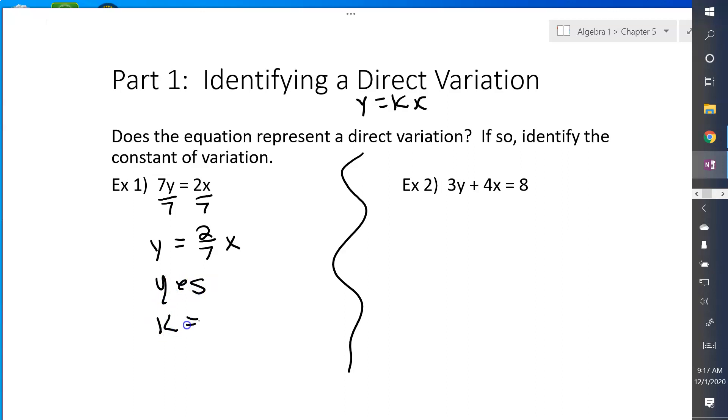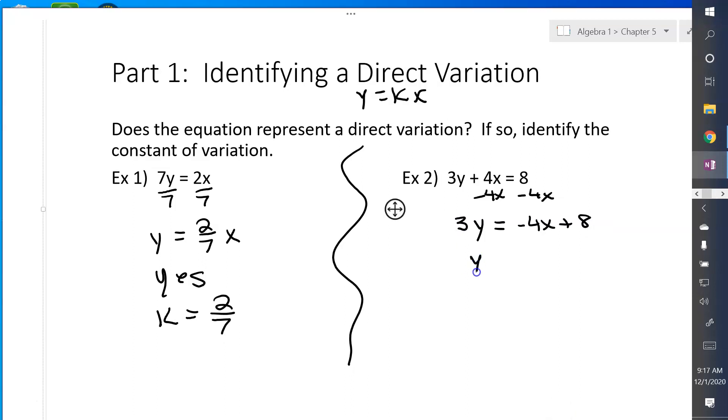And my constant of variation is the fraction 2 over 7. Now let's look at example 2. I need to solve for y. So I'm going to subtract 4x from both sides, and so I get 3y equals negative 4x plus 8. Then I need to divide both sides by 3. So y equals negative 4 thirds x plus 8 thirds. And that plus 8 thirds on the end means you do not have a direct variation, and so then there is no constant of variation.